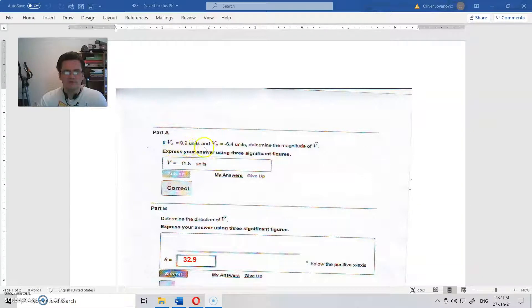Vx is 9.9 units and Vy is minus 6.4 units. Determine the magnitude of V. Express your answer using three significant figures. I get that was 11.8.